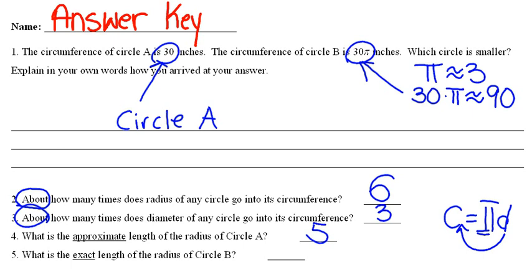Question number five reads, what is the exact length of the radius of circle B? Circle B has circumference of 30 pi and radius goes exactly 2 pi times into circumference. So if our circumference is 30 pi, that means the diameter is 30...